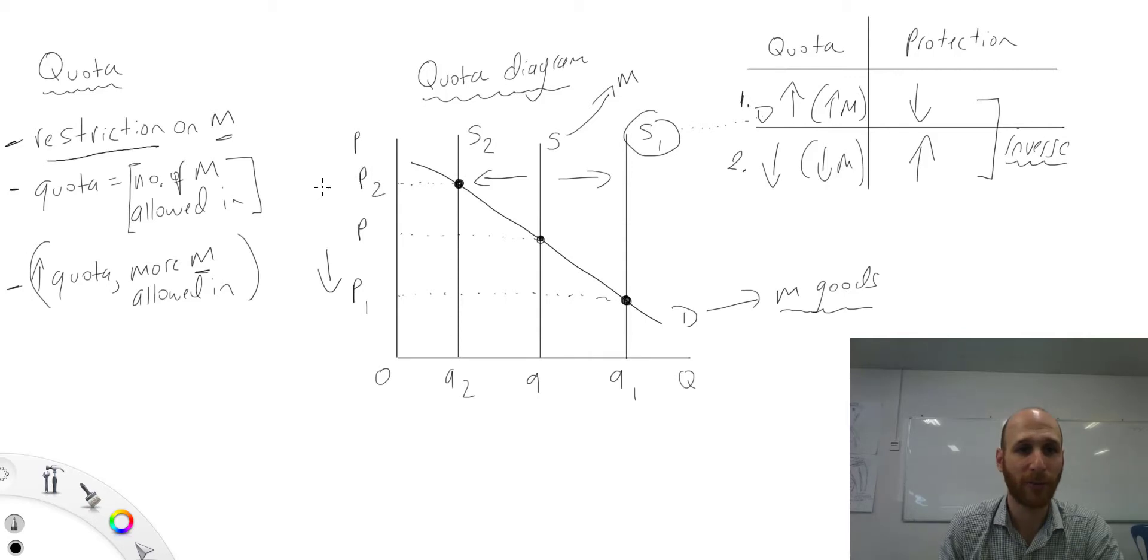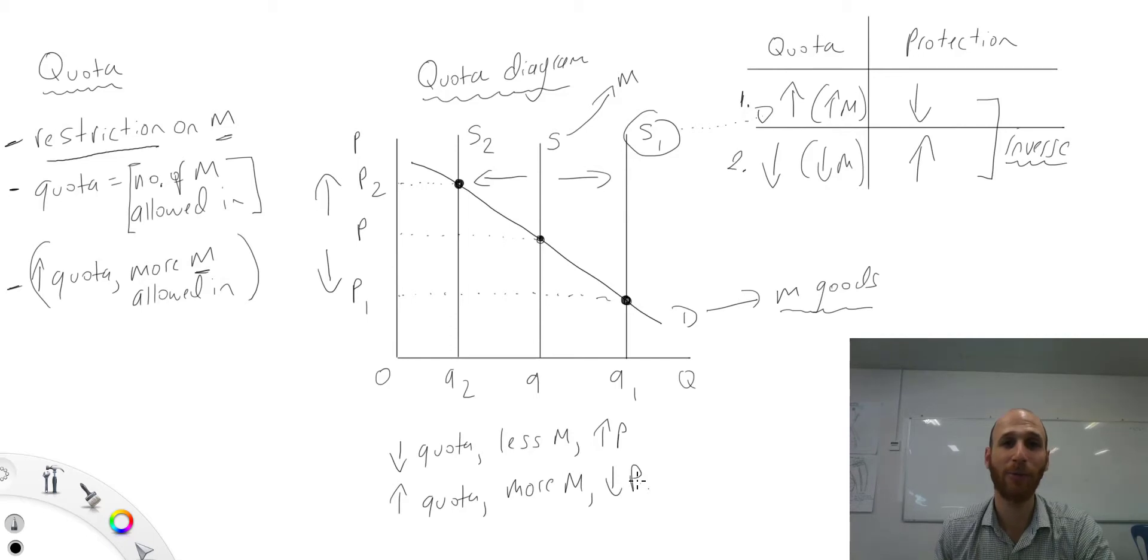So when we have a lower quota, less imports, a higher price for those imports. If we have a higher quota, that means more imports, and that will lower the price for those imports. And this is how we look at a quota.